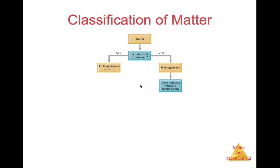If a homogeneous material has a variable composition, then we call it a homogeneous mixture, also known as a solution. If it does not have a variable composition, then we call it a pure substance.